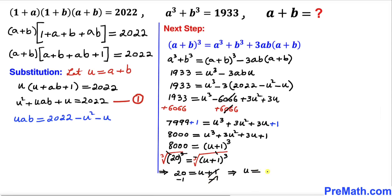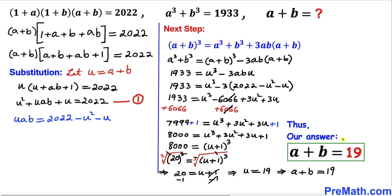So u = 19. Since u = a+b, we can write a+b = 19. Thus our final answer is a+b = 19. Thanks for watching and please don't forget to subscribe to my channel for more exciting videos.